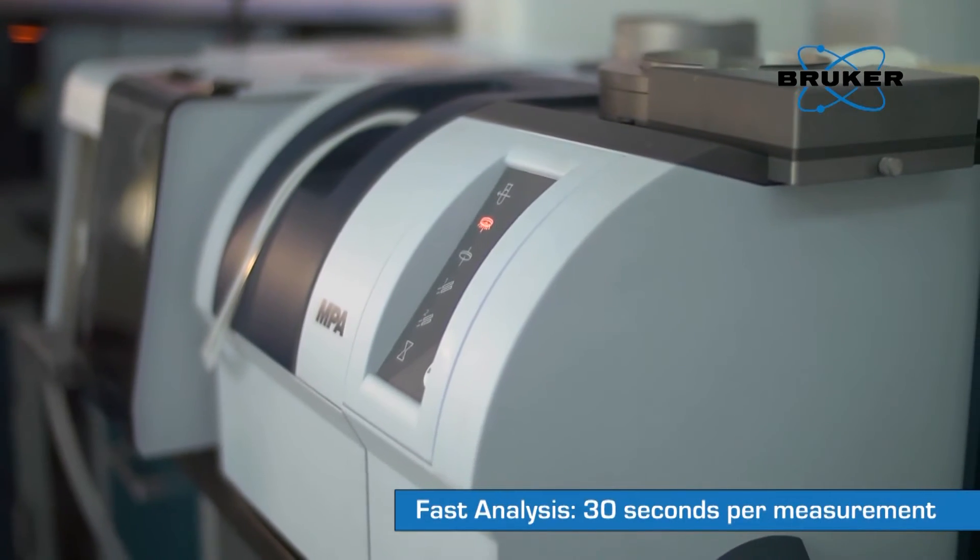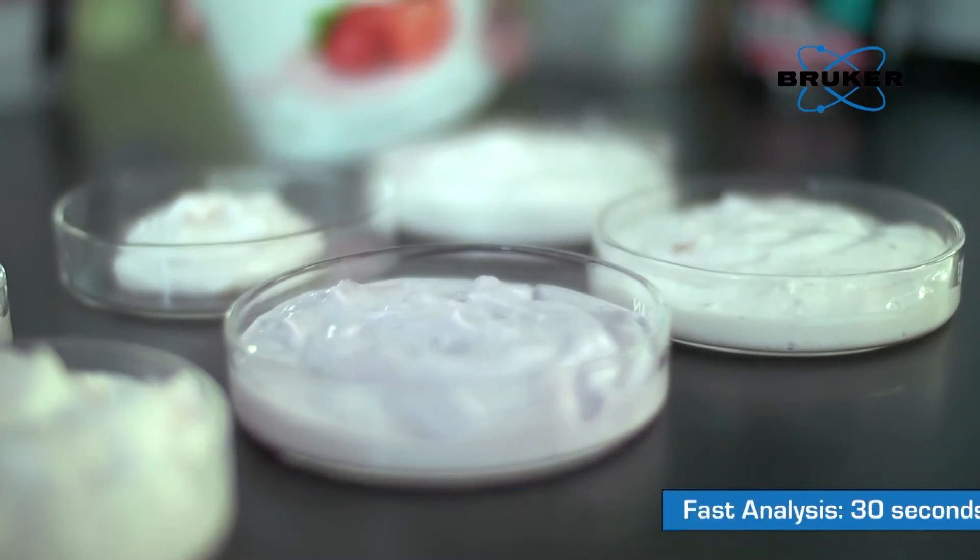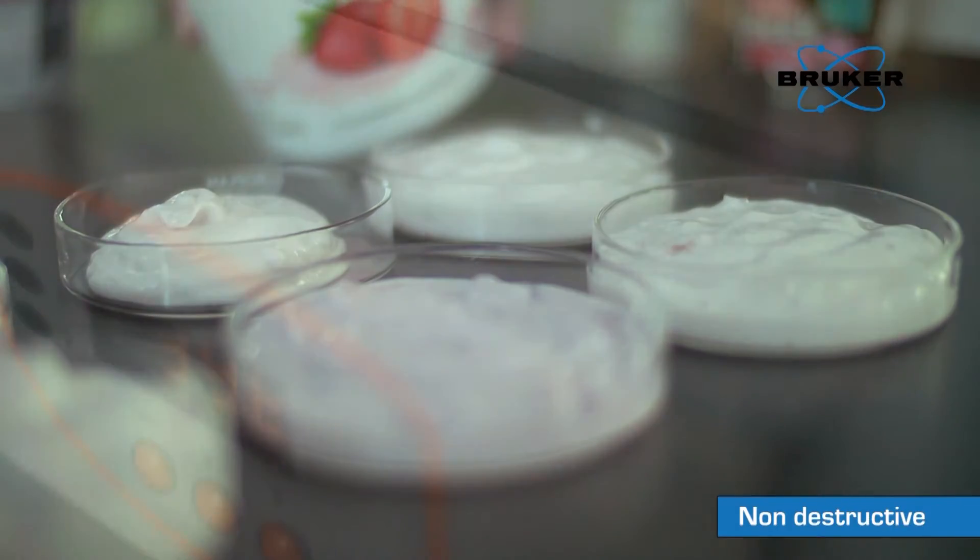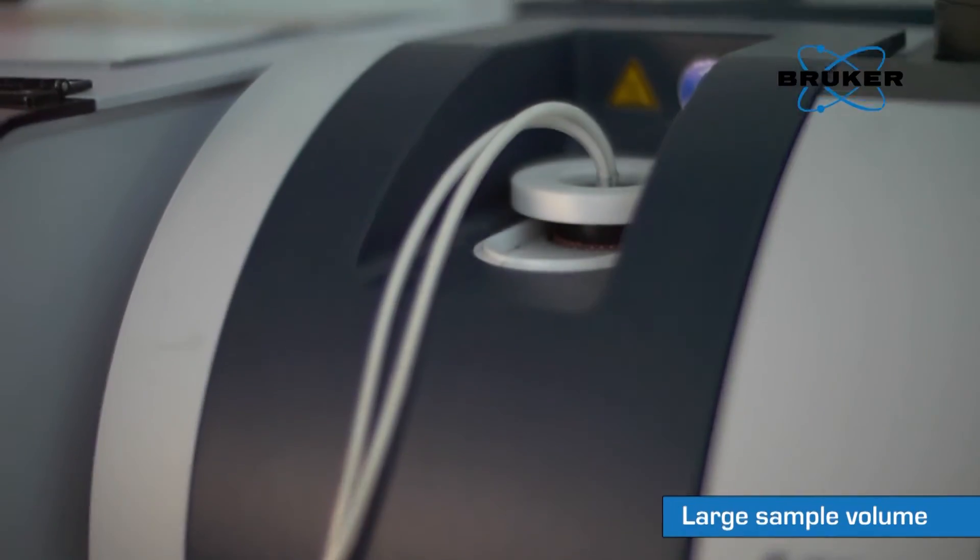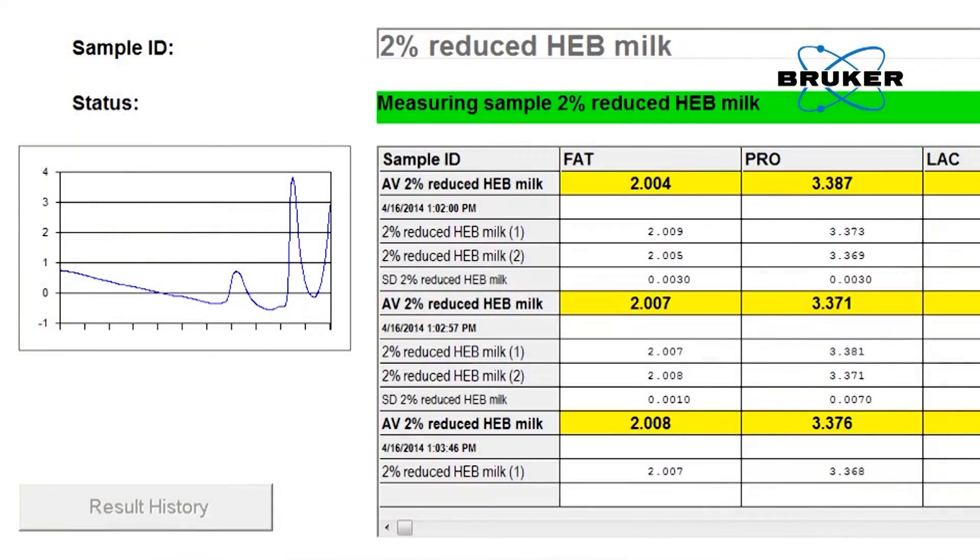The Bruker MPA dairy system is configured to test the full range of dairy products, providing simplified routine testing without the need to cross-train on multiple instruments. Faster ROI with minimal risk and obtainable data from start to finish to support lean manufacturing and Six Sigma initiatives.